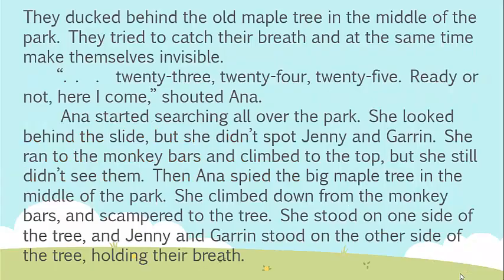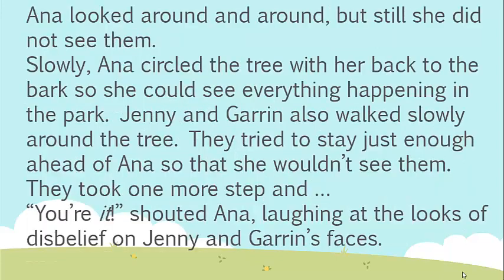They ducked behind the old maple tree in the middle of the park. They tried to catch their breath and at the same time make themselves invisible. Twenty-three. Twenty-four. Twenty-five. Ready or not, here I come, shouted Anna. Anna started searching all over the park. She looked behind the slide, but she didn't spot Jenny and Guerin. She ran to the monkey bars and climbed to the top, but she still didn't see them. Then Anna spied the big maple tree in the middle of the park. She climbed down from the monkey bars and scampered to the tree. She stood on one side of the tree and Jenny and Guerin stood on the other side of the tree holding their breath. Anna looked around and around, but still she did not see them.